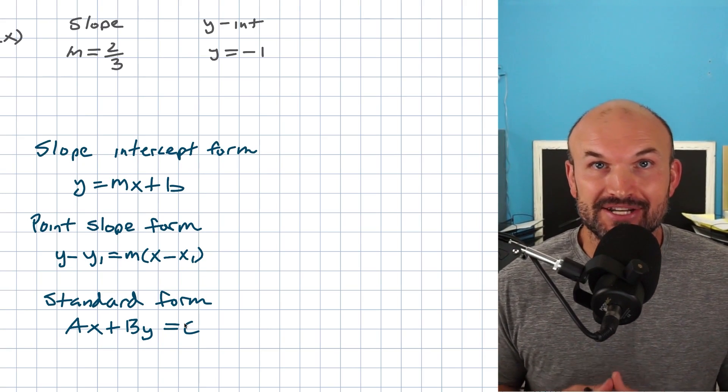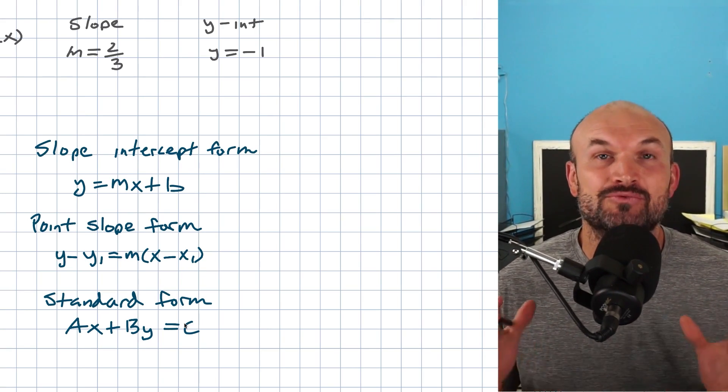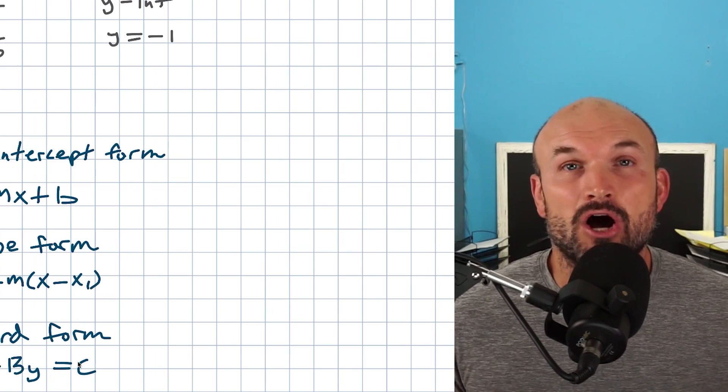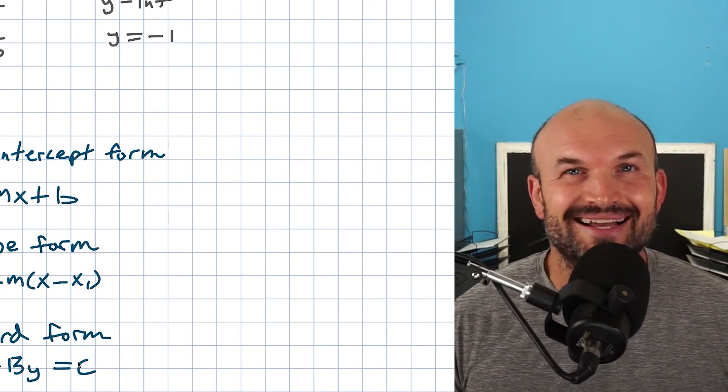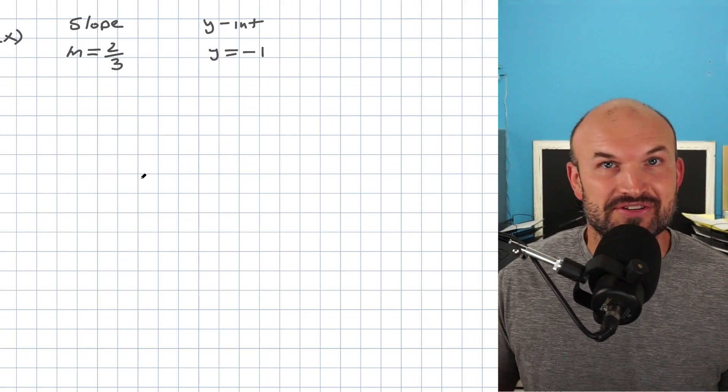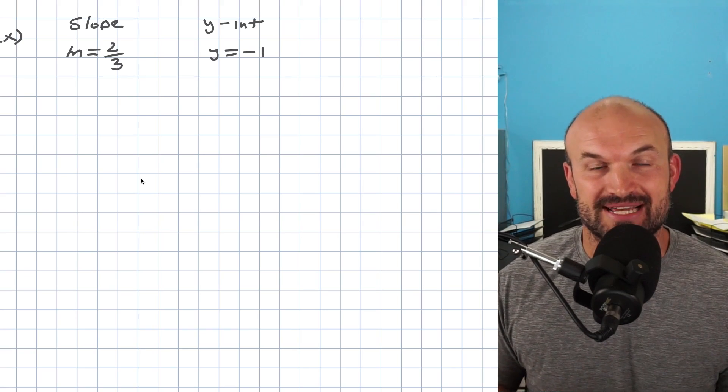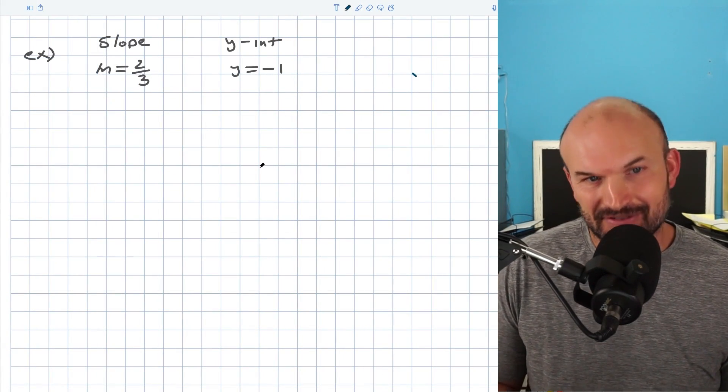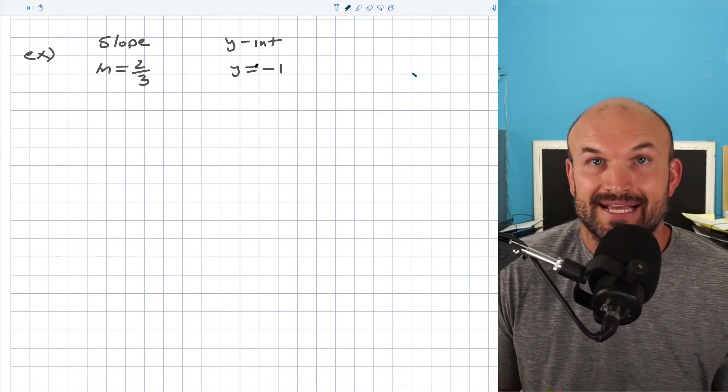In this video, we're going to focus on that easy way to write the equation of the line. We'll talk about all those other equations in another video. For right now, let's focus on the basics. Because if you're going to be writing the equation of a line, you better know what it represents. So let's take a look at this first example where we're given the slope and the y-intercept.